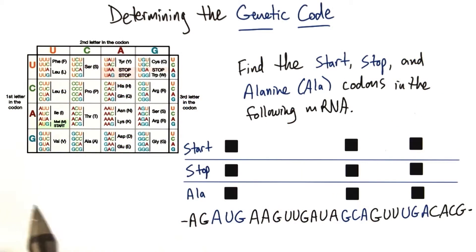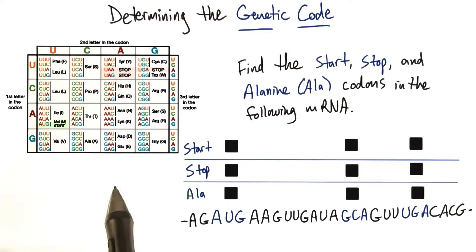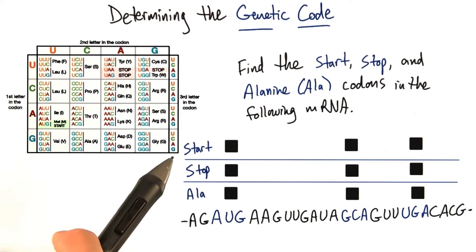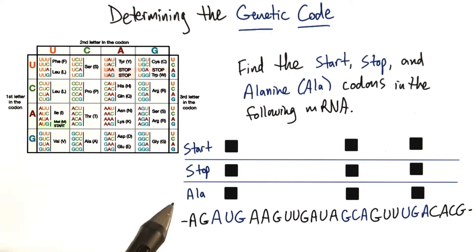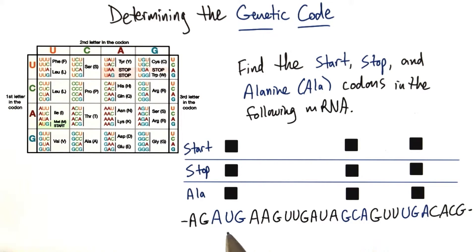So now, using the genetic code, I want to see if you can find the start codon, the stop codon, and the codon that codes for alanine (ALA) in the following mRNA sequence. There are three codons to choose from: AUG, GCA, and UGA.